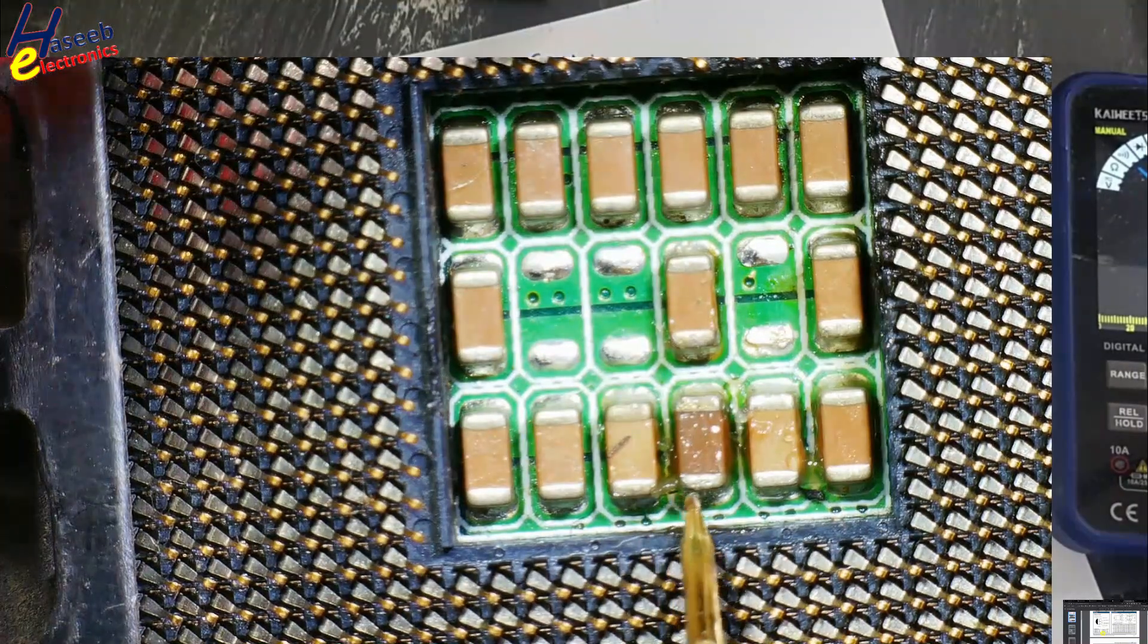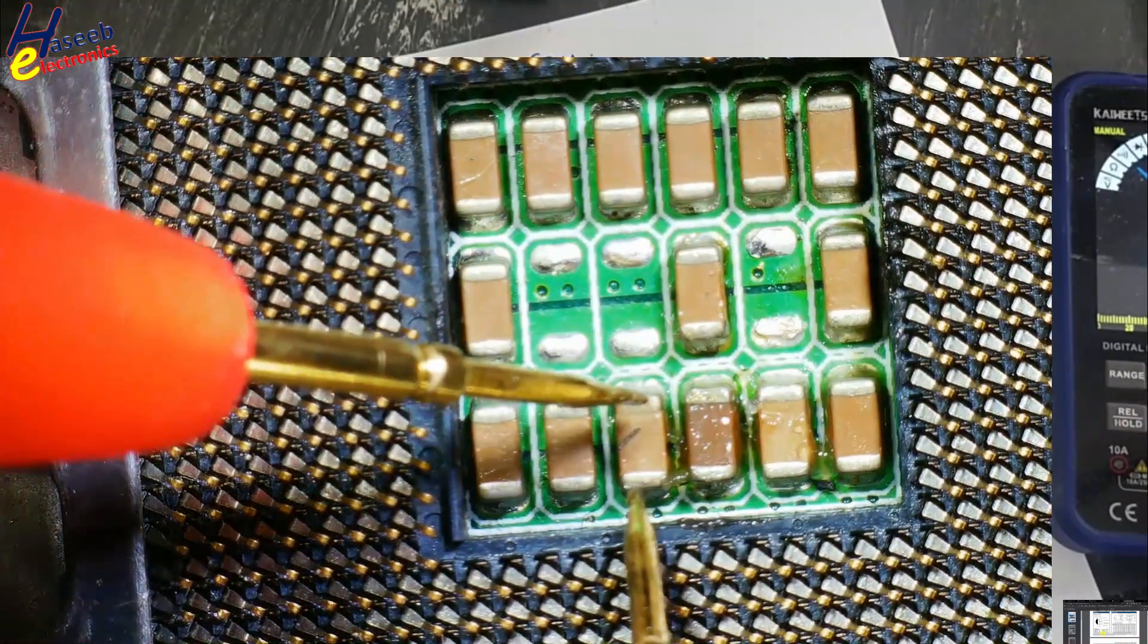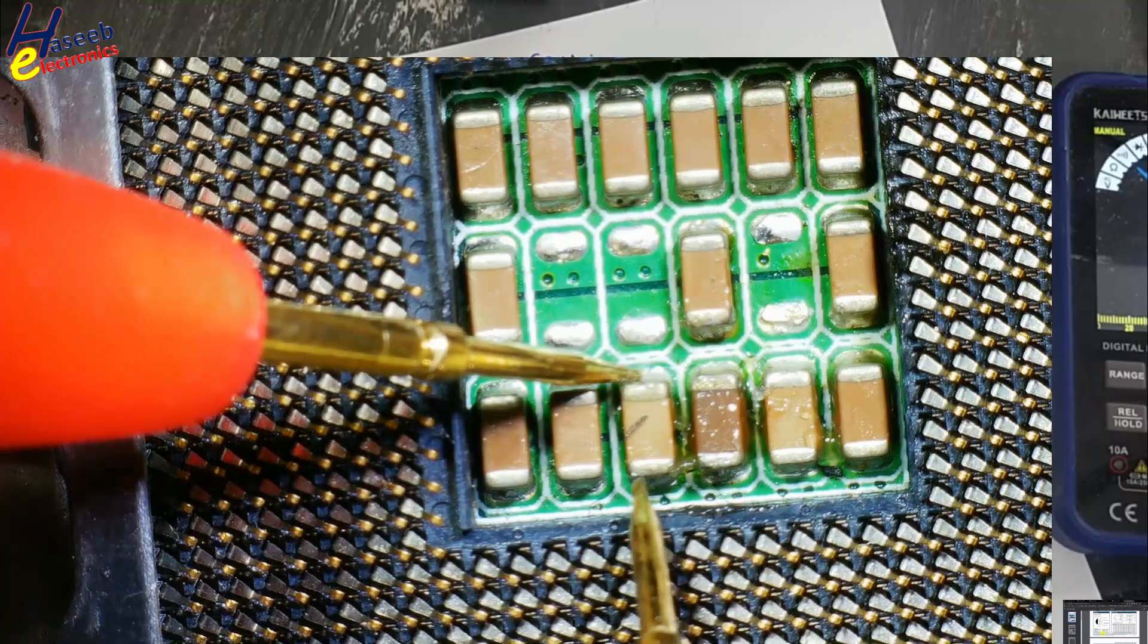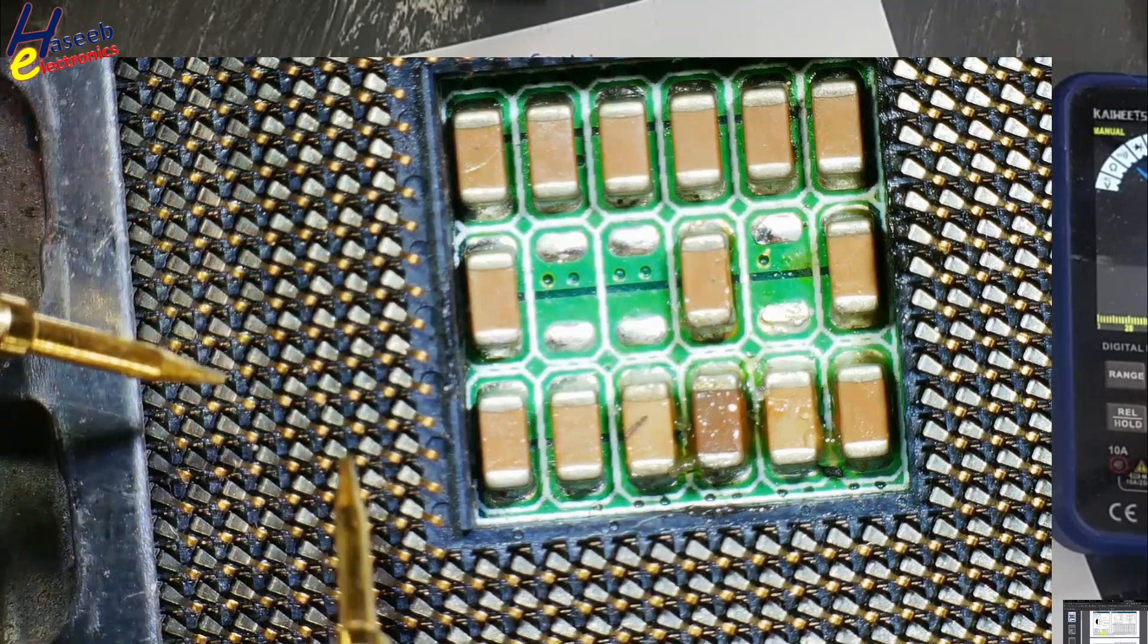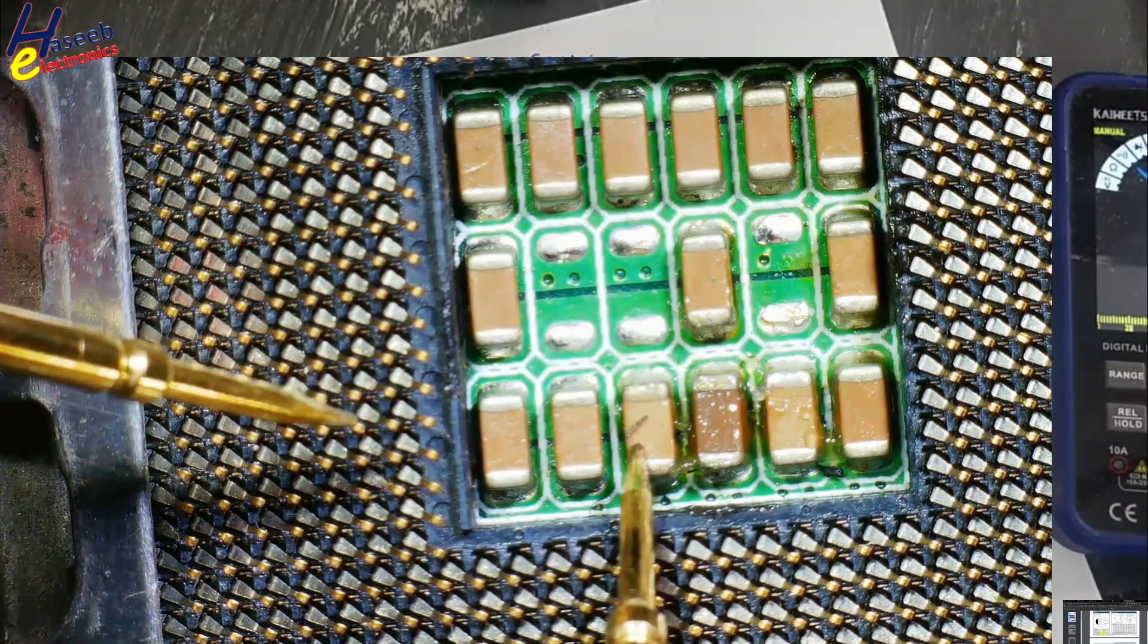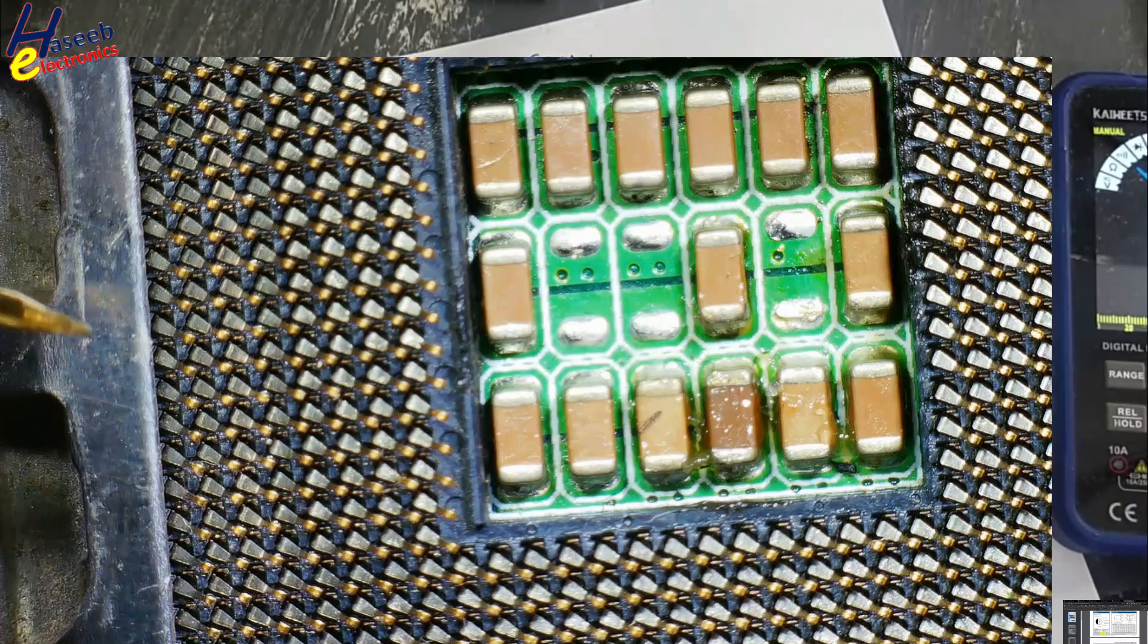This end is negative, this end is positive, or this is negative, this is positive. These are non-polar capacitors. We need to inject voltage with correct polarity of the circuit.